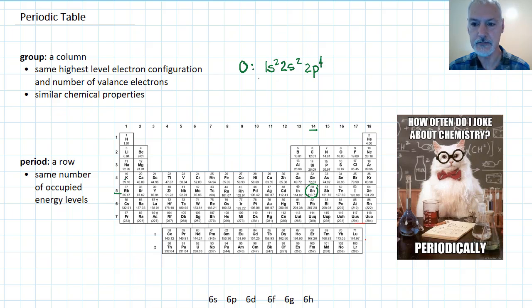Beneath it, sulfur, with 16 electrons, has the arrangement 1s2, 2s2, 2p6, so that takes care of 10, 3s2, and 3p4.